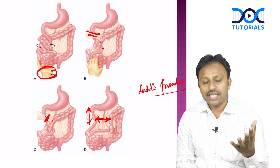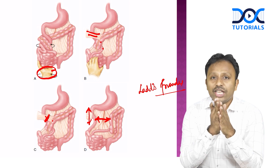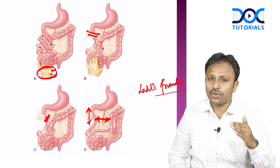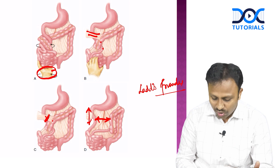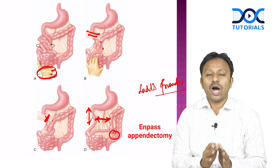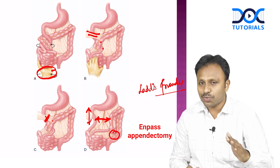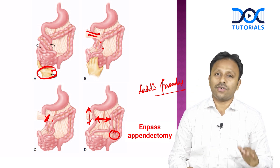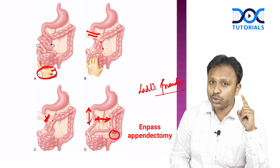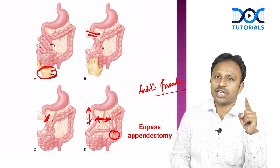So volvulus is derotated, Ladd's bands are divided, duodenocolic isthmus is widened to prevent further volvulus, and moreover an incidental appendectomy is done. All these steps put together are named as Ladd's procedure — the procedure of choice for malrotation in any newborn presenting with bilious vomiting. Always have malrotation in mind.